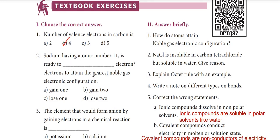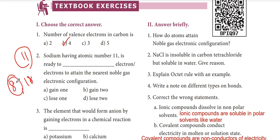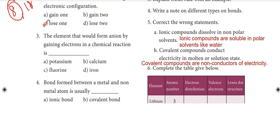Second question: sodium, having atomic number 11, is ready to lose how many electrons to attain the nearest noble gas configuration? Sodium's electronic configuration with atomic number 11 needs to reach the stable noble gas configuration of 8 electrons. It has to lose 1 electron from its outermost shell. So the answer is option C: lose 1 electron.